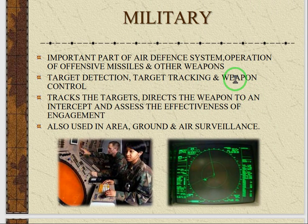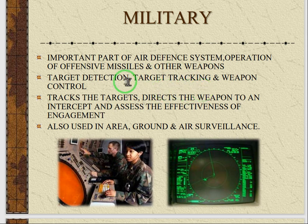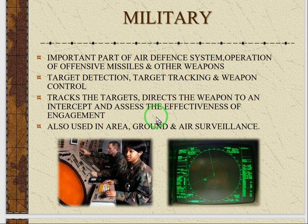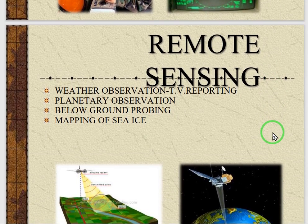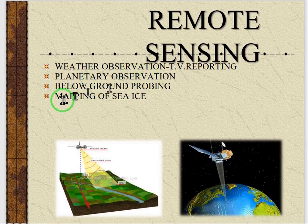In military, radar is an important part of the air defense system — operations, offensive missiles, and other weapons. It is used for target detection, target tracking, and weapon control: track the targets, direct the weapon to intercept, and assess the effectiveness of the engagement. Also used in area, ground, and air surveillance. It can also be used for remote sensing: weather observation, TV reporting, planetary observation, ground probing, and mapping of sea ice.